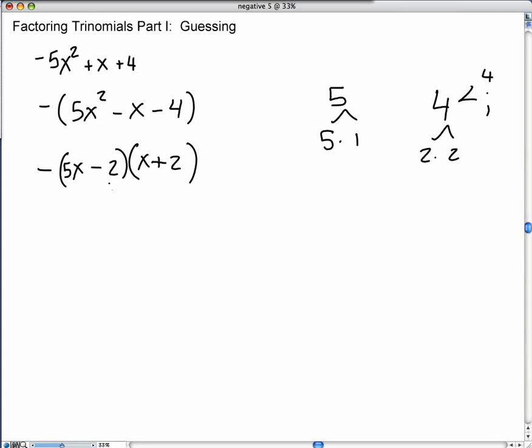What about the linear term? Let's see, negative 2 times x is negative 2x, and 5x times 2 gives you 10x, and that gives you 8x, which is not the middle term. So that's not going to work.